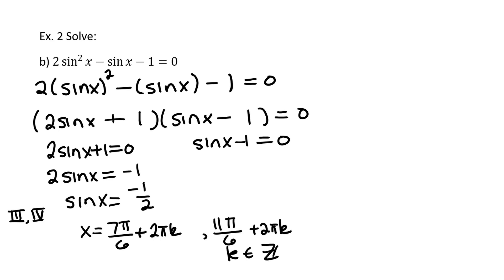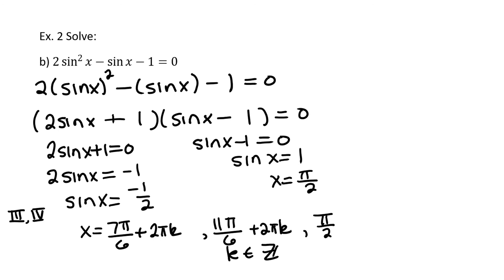For the other factor, sin x − 1 = 0, so sin x = 1. The value of x where sine equals 1 is x = π/2. We list all periodic multiples: x = π/2 + 2πk, where k is an integer.